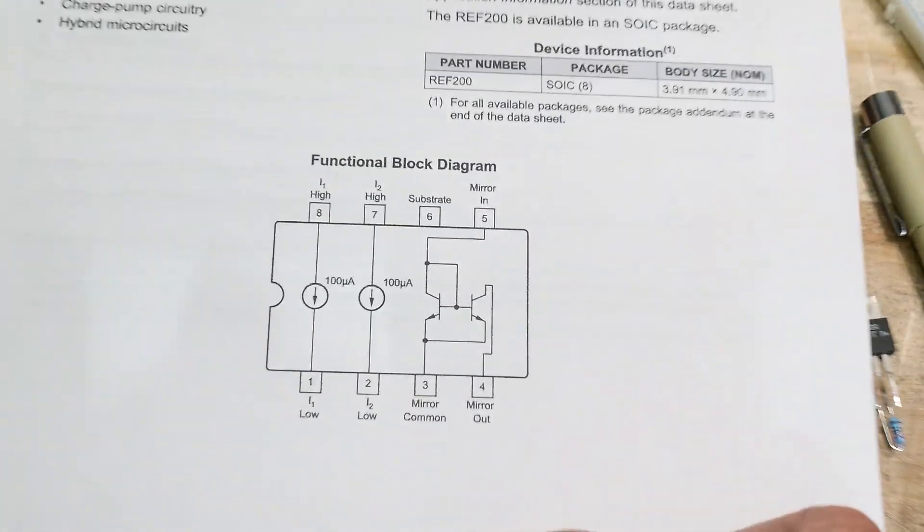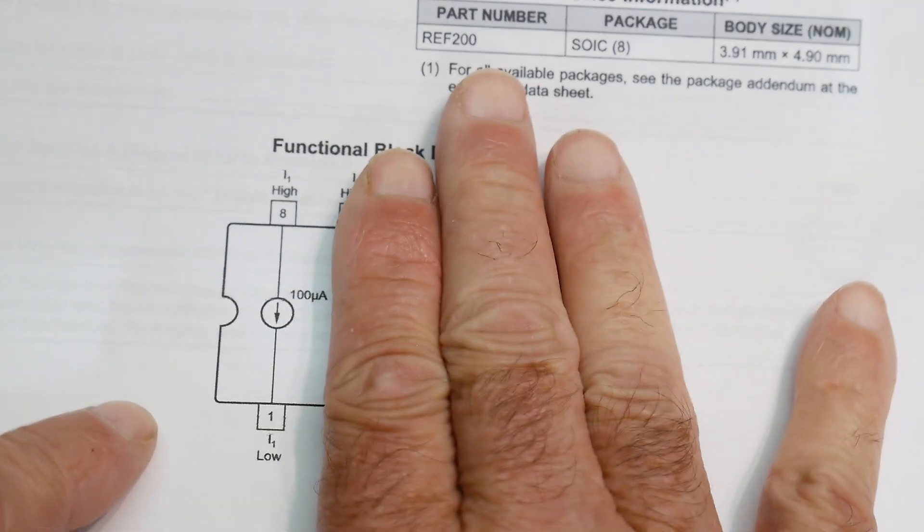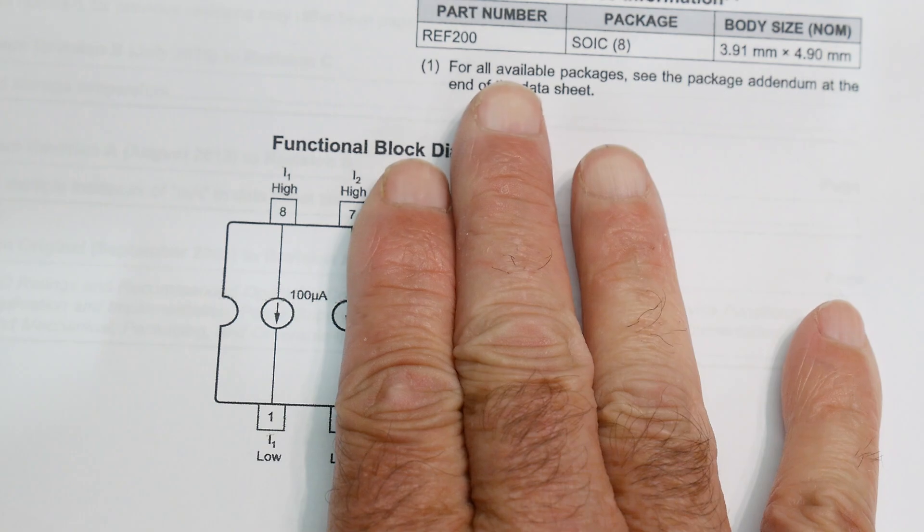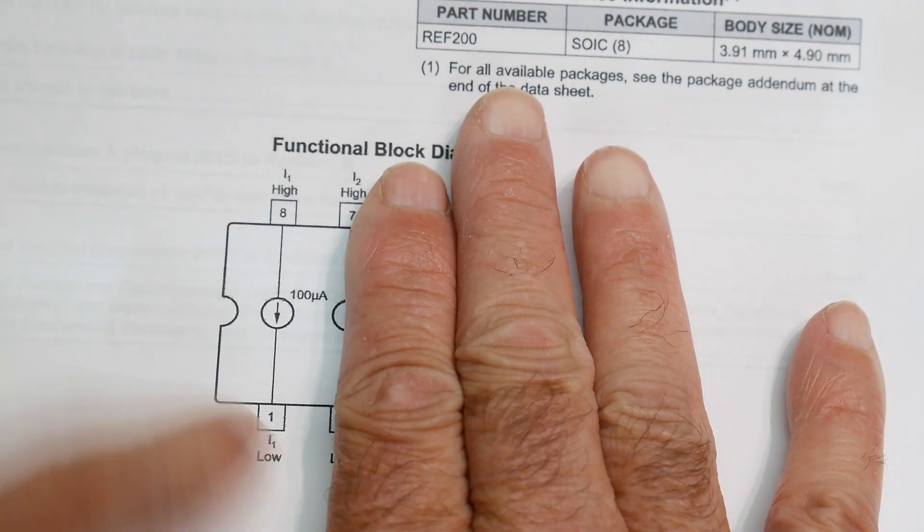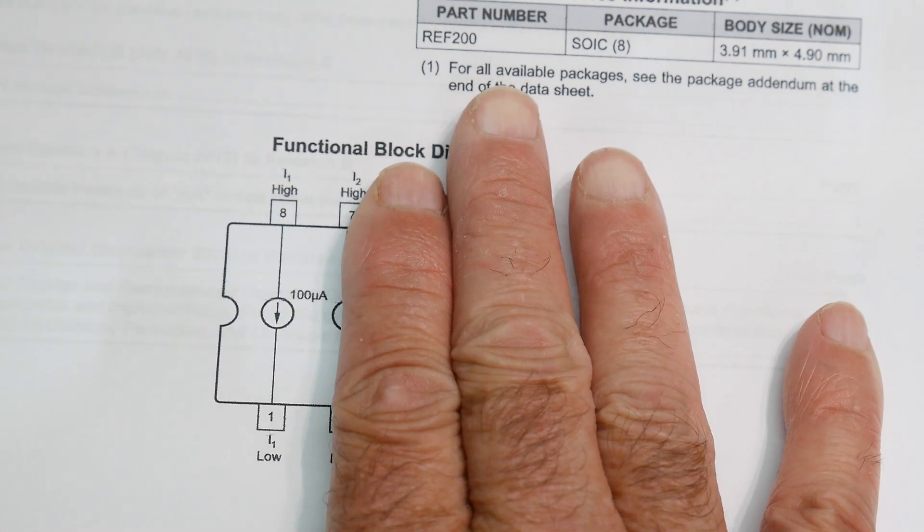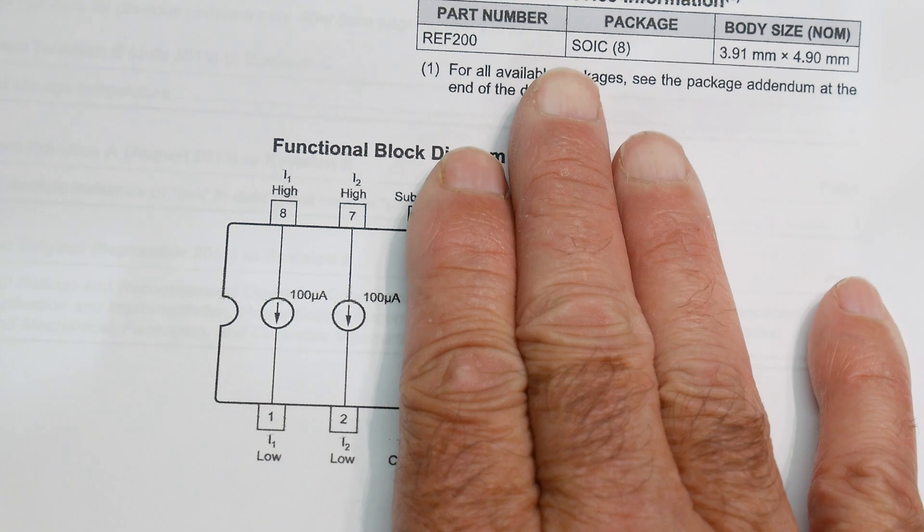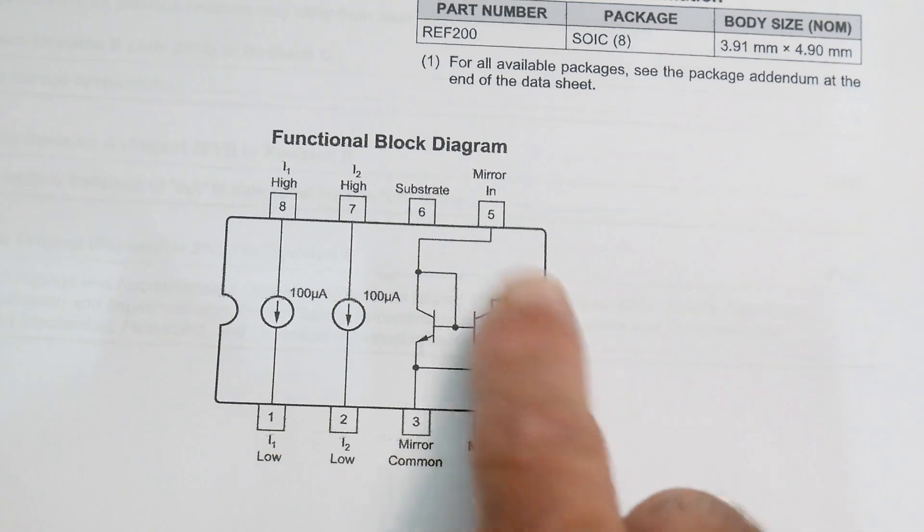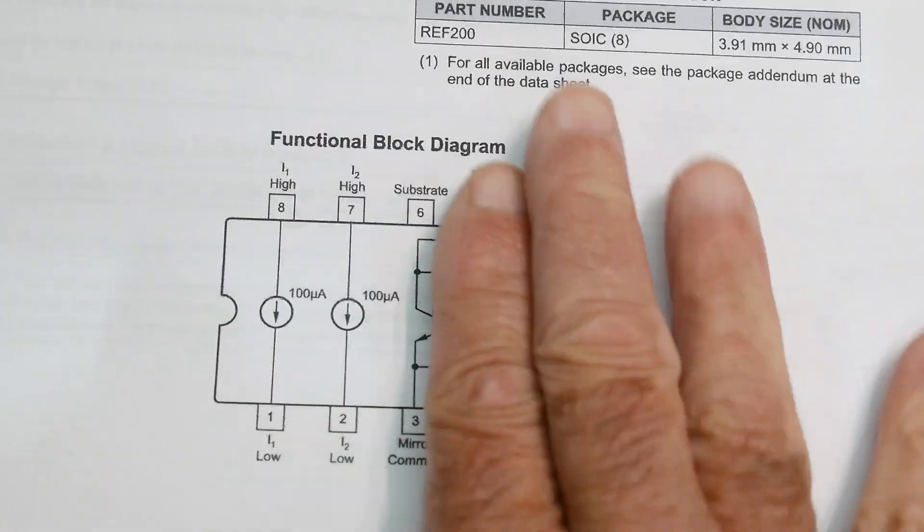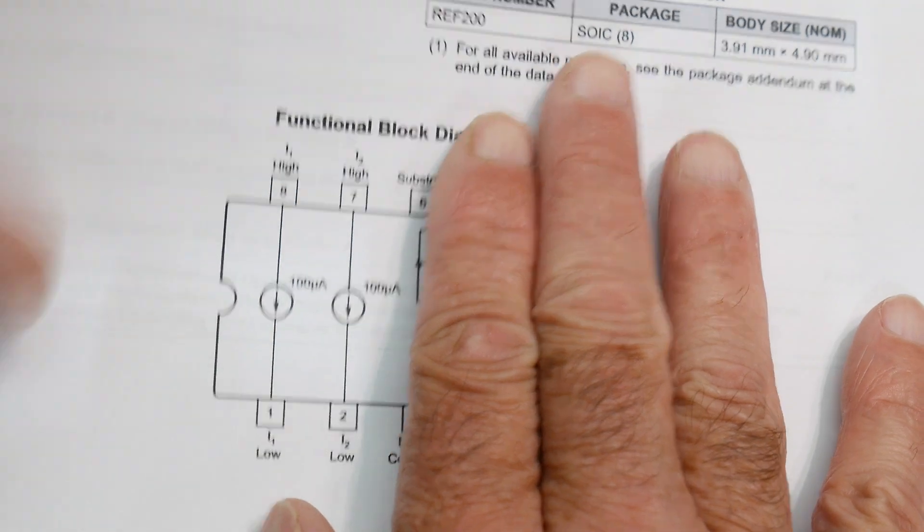So what's this thing look like? Here's the package. So from pin eight to pin one, it's a hundred microamp current source. So you just hook up something here and something here and you'll have a hundred microamps flowing in it and it makes it at a constant rate. And there's another one. So it's got two of them. So this one goes between pin seven and pin two. And then it's got a couple of transistors over here. We'll talk about that later, but let's take a look at these two current sources.